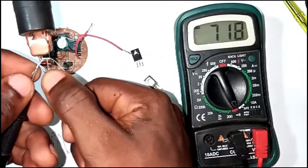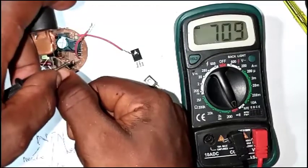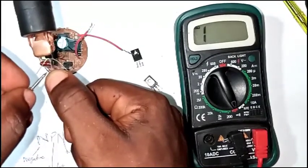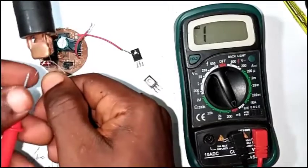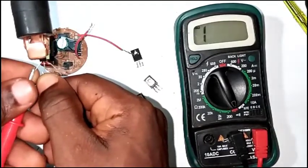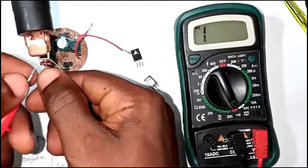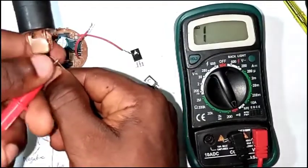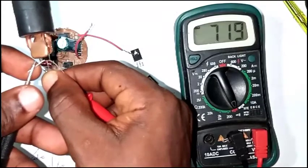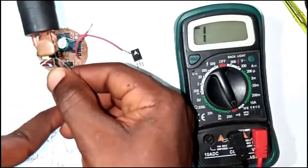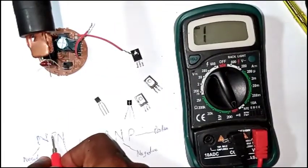So with the positive probe at the middle and negative at one side — you can see it's reading. Then at the other side it's also reading. That tells you the middle is positive. But if I put the negative probe at the middle and positive at the side — you can see nothing is reading. Not at this side, and not at this side either. But if I put my positive back at the middle, it's reading again. That confirms the middle pin is P, which is positive — so this is NPN.